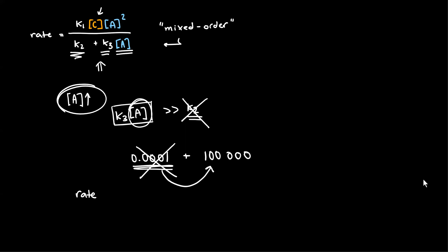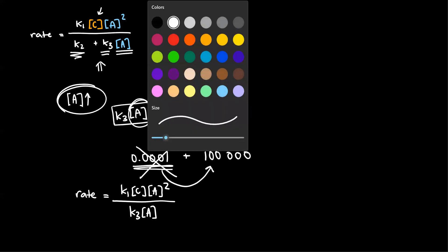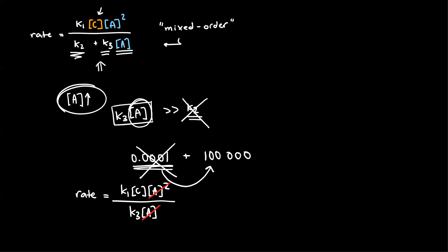And that's what we're going to do with K2 in the denominator at the beginning of the reaction when we have a high concentration of A. So the equation basically becomes rate equals K1 times C times A squared over K3 times the concentration of A, since the K2 term is basically negligible. Looking at the numerator and denominator, we can cancel out one of the concentrations of A.